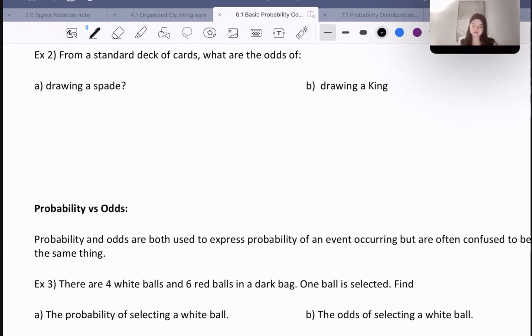The odds of a spade would be 13 over 39, because there's 13 spades in the deck and the other 39 cards are not spades. They're hearts, diamonds, or clubs. So this is 13 to 39, which actually reduces to a 1 to 3 ratio.